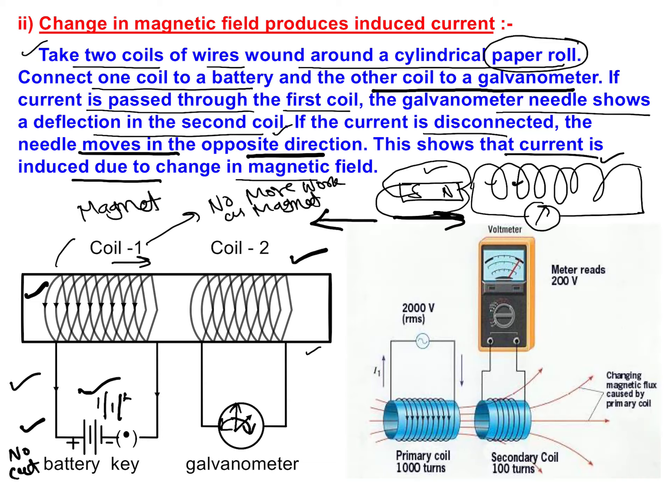And exactly that is what we do in the case of a generator. In a generator, we continuously rotate the armature, so the flux linkage continuously changes, and we get an AC supply.